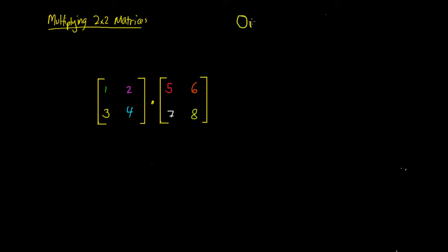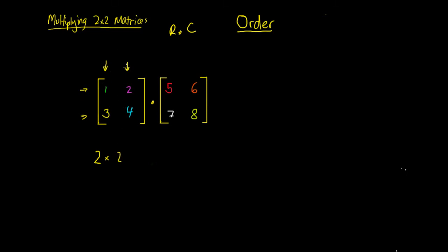We've previously said that when we have a matrix it has an order — some number of rows multiplied by some number of columns. So if we go down to this matrix here, we know it's got a row which goes from left to right, and it's got 2 rows. So this matrix has 2 rows and 2 columns, and we call it a 2 by 2 matrix.